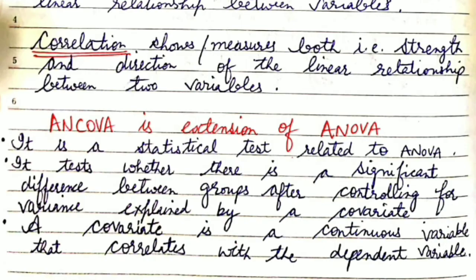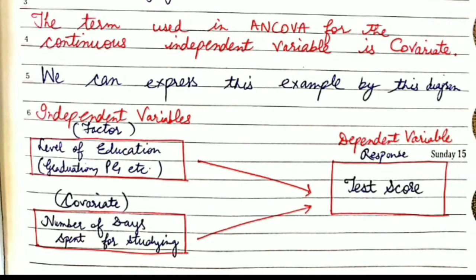The question arises: what is the difference between ANOVA and ANCOVA? The basic difference between these two terms is the 'C', which stands for covariance. Like ANOVA, ANCOVA also has a single continuous response variable, but unlike ANOVA, ANCOVA compares a response variable by both a factor and a continuous independent variable.